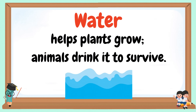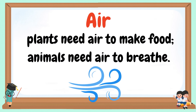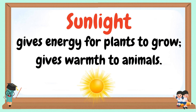Water helps plants grow, and animals drink it to survive. Air: plants need air to make food, and animals need air to breathe. Sunlight gives energy for plants to grow and gives warmth to animals.